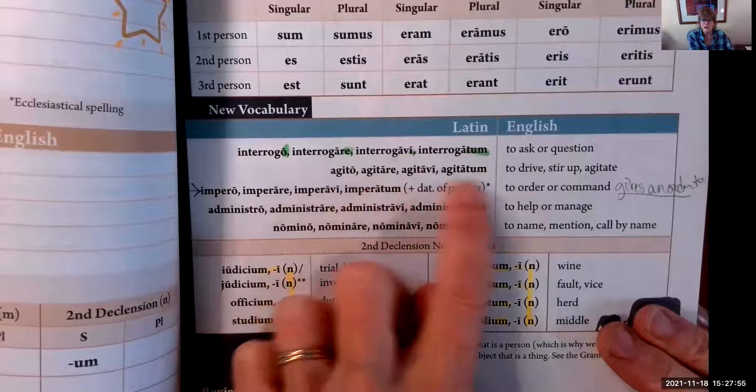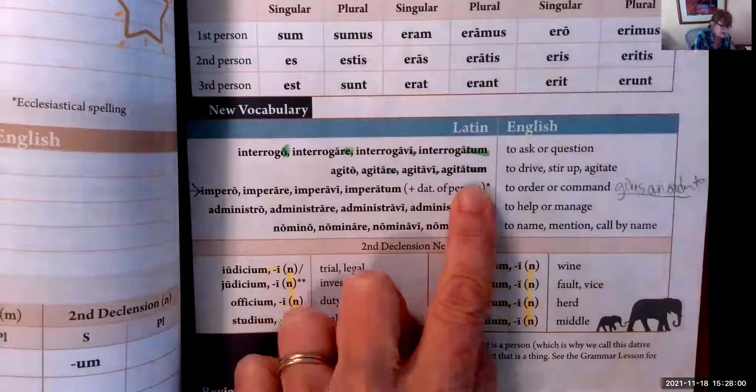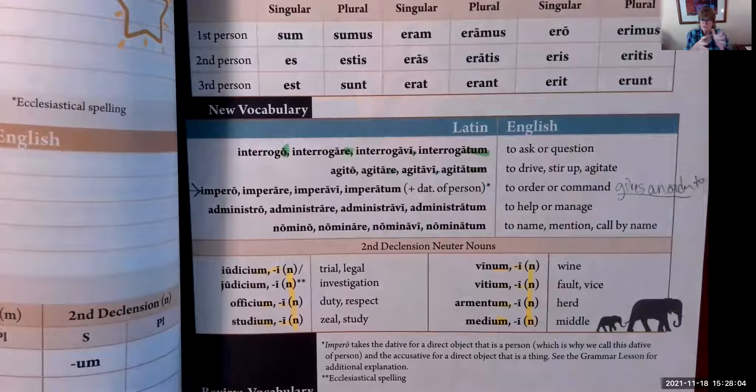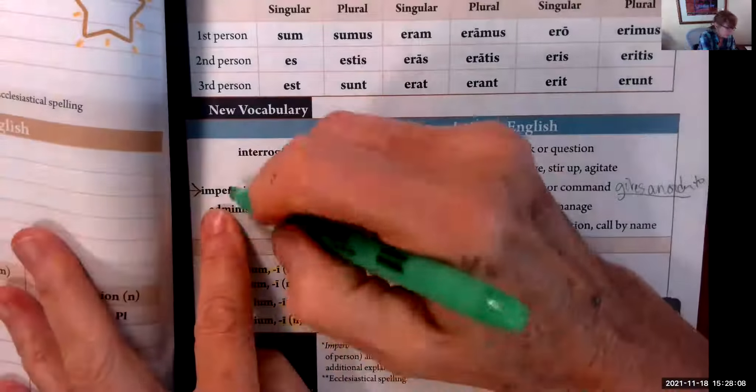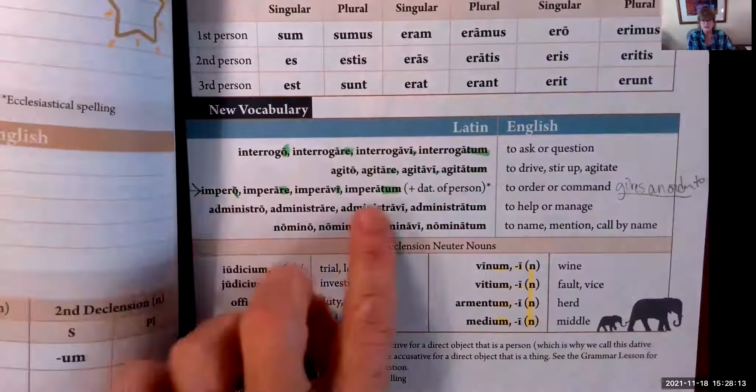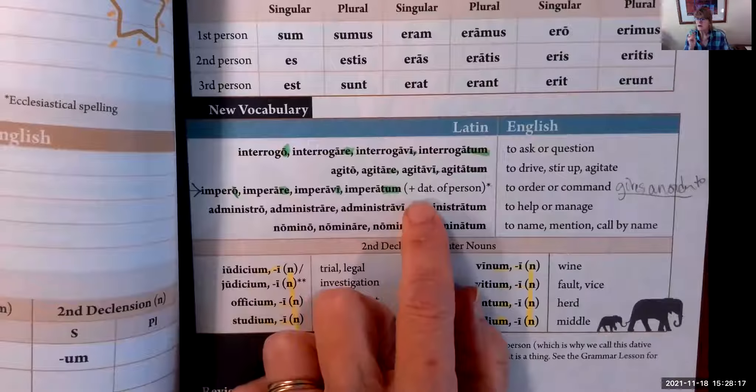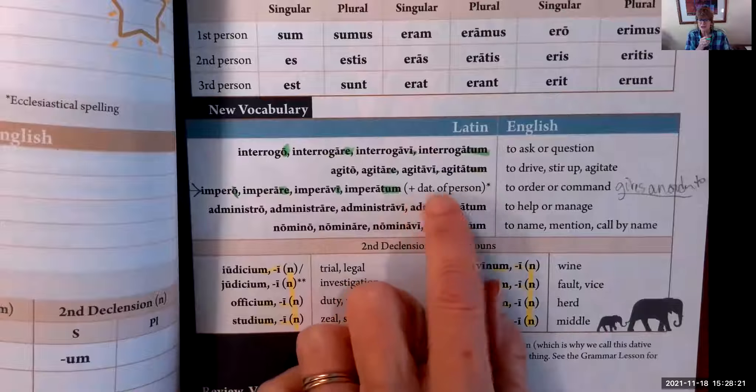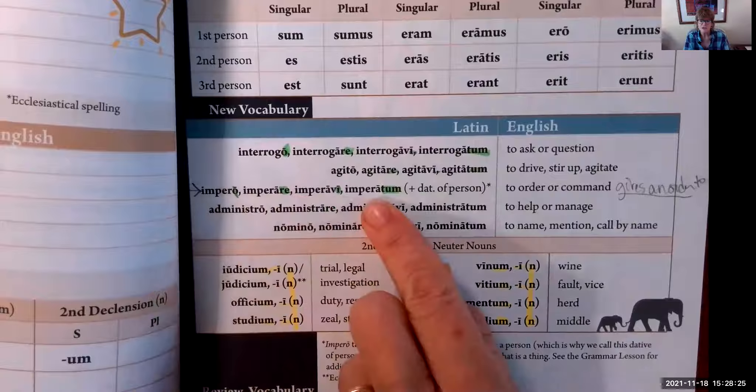Agito, agitare, agitavi, agitatum. You can see the word 'agitate' in there, and you think about in a washing machine—right in the middle is the agitator, it stirs things up. Impero, imperare, imperavi, imperatum. I'm underlining the endings. This is a tricky verb. They have an asterisk there, and they have '+dat of persons.' Dat is short for dative.